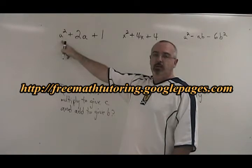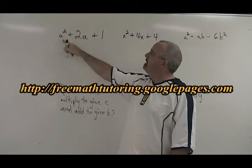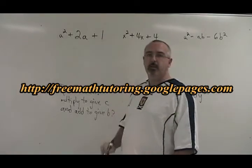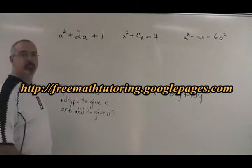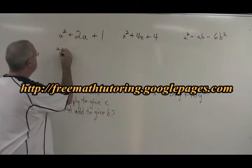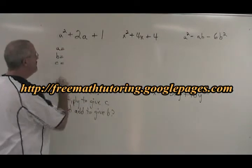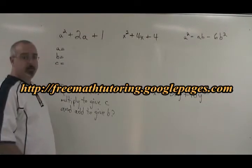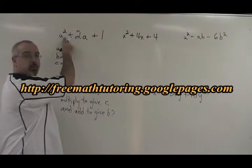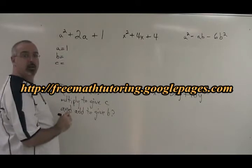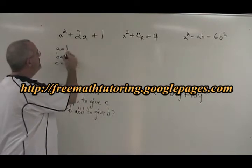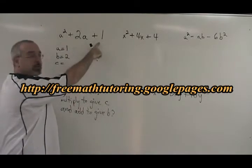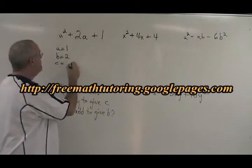The first thing to do is to identify the numerical coefficients of the first, second, and third terms in your trinomial. We identify these as a, b, and c. The numerical coefficient of a² is 1. The numerical coefficient of 2a is 2. The numerical coefficient of 1 is 1.